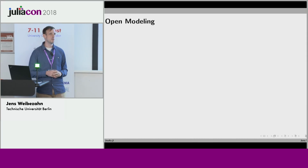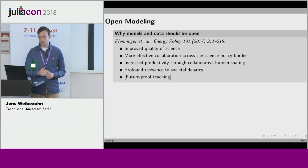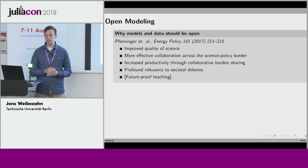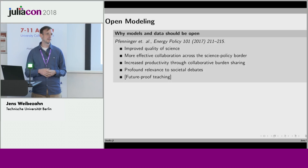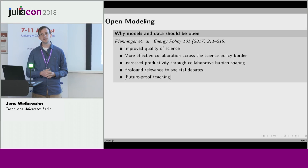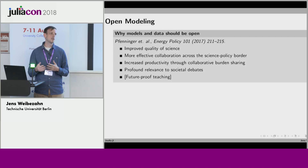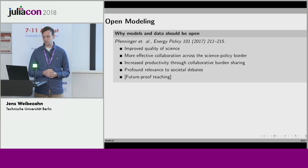This is why we're going to move toward open modeling. There's actually a paper by Stefan Fanninger and others, and they argue there are four important topics why you should be open in your models and data. One is improved quality — obviously, if others can check what's happening inside your model, they can validate and replicate, and they could also find out how your assumptions actually affect your outcomes.